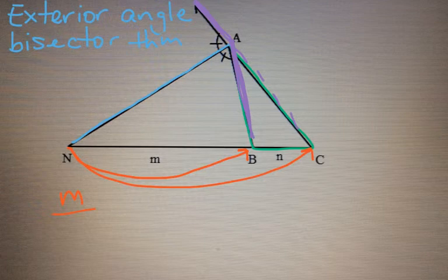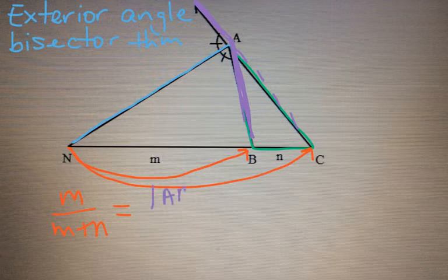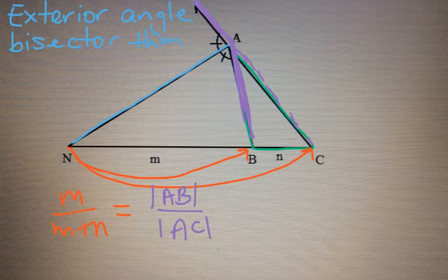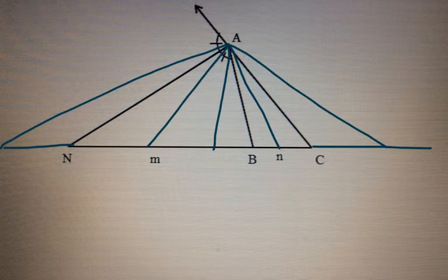That distance there, m plus n, is going to be equal to the ratio of the important line segments: the exterior angle side AB, that side length, and the extension of the exterior angle side AC. So that is the rule and those are the patterns we are going to get familiar with. But let's look at a diagram now where we have more sides coming from our angle point A.